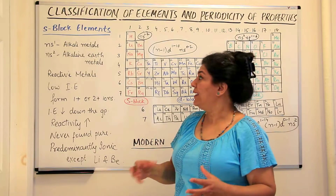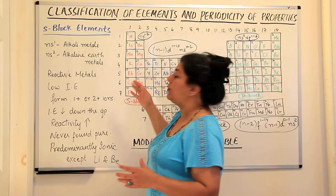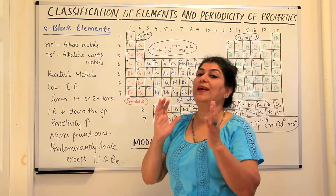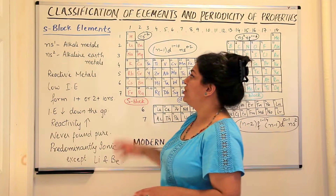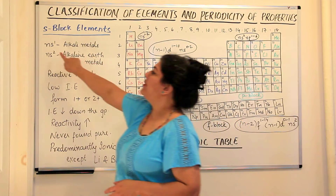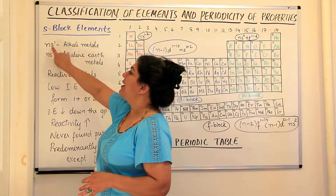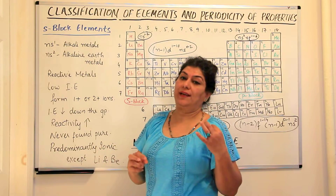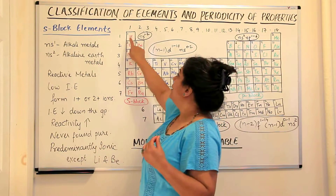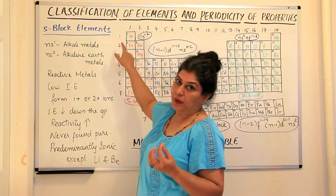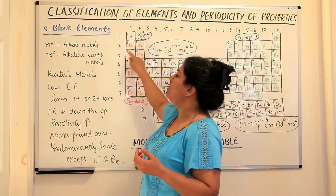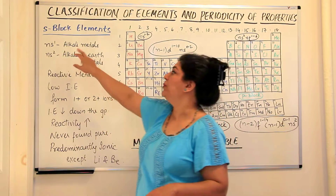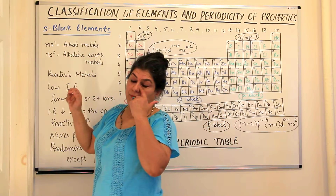We find that in the first group, all elements have one general electronic configuration which can be written as ns1, where n stands for the principal quantum number. So 1s1, 2s1, 3s1, 4s1 can all be written as ns1.